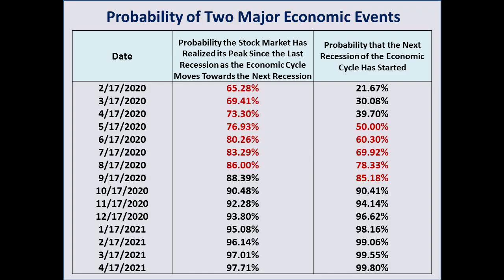Here is the table showing both major economic events: the probability that we have seen the peak of the stock market and the probability that the next recession has started. The probability percentages colored red indicate the most likely timeframe that both major economic events will occur. Based on this probability distribution, it is almost guaranteed that the United States will be in a recession towards the end of 2020, and the stock market will peak soon and then fall significantly before the year of 2020 is over.